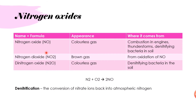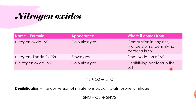Nitrogen dioxide, NO₂, is a brown gas formed from the oxidation of nitrogen oxide — nitrogen oxide combined with oxygen forms nitrogen dioxide. Then there is dinitrogen oxide, N₂O, another colourless gas, which is formed by denitrifying bacteria in the soil through the conversion of nitrate ions back into atmospheric nitrogen.